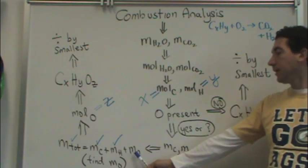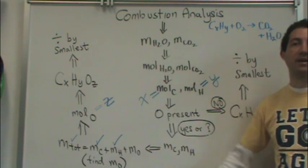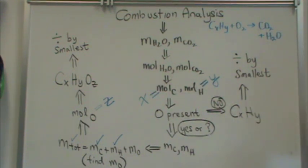Well, if you solve for the mass of oxygen and you get a really small number—so compared to the mass of carbon and hydrogen, the mass of oxygen is really, really small, maybe 10 or 100 times or more smaller—then essentially there's no oxygen.